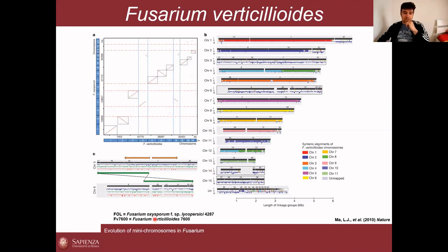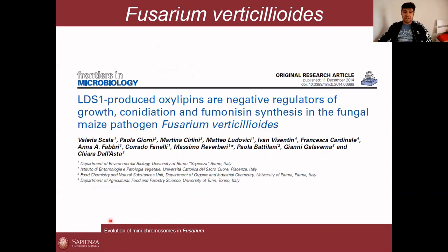What they described in that paper is that the Fusarium oxysporum genome is made of a core part and a dispensable part, and the dispensable part is made of chromosomes 3, 6, 14, and 15. The strain they used was Fusarium oxysporum f.sp. lycopersici 4287, and the Fusarium verticillioides 7600. From now on, when I refer to Fol, I mean that strain. Our group in Rome has long been interested in fumonisins and mycotoxins in general.